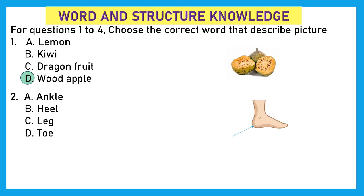Question 2. Ankle, heel, leg, or toe? Can you see where the arrow is and which part of the body it is? It is option B, heel.